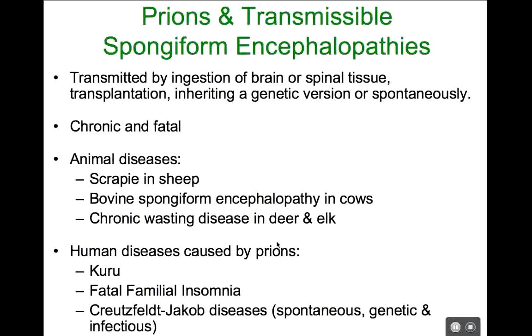The really scary one is spontaneous transmission — for some reason we don't understand, brain proteins seem fine one day and the next they become misshapen. In all cases, prion diseases are chronic and fatal. When you have misshapen brain proteins that aggregate together into a lesion, that's the beginning of the end — there's nothing we can do about that.